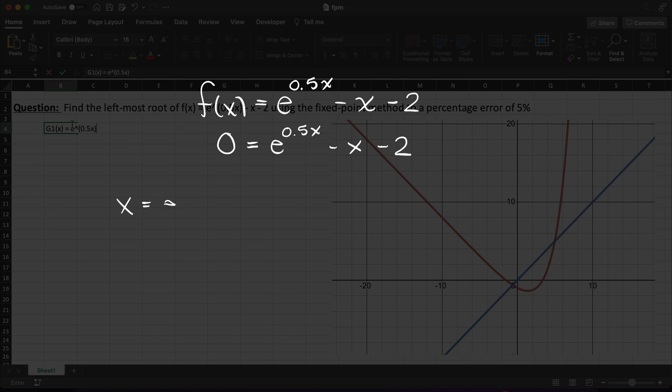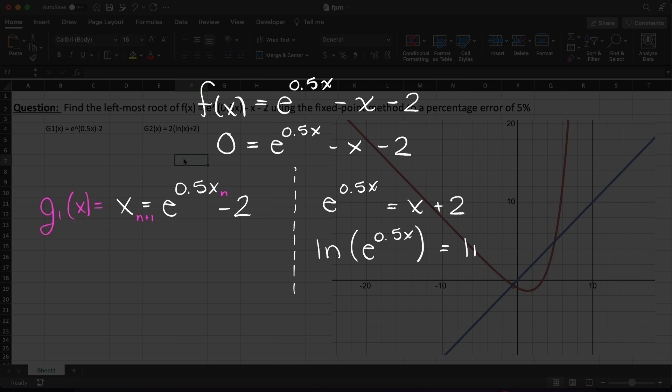That is, we need to set f of x to 0 and solve for one of our x terms. As you can see here I completed that for you and our two potential g of x terms are e to the power of 0.5x minus 2 for g1 of x, and 2 ln of x plus 2 for g2 of x.